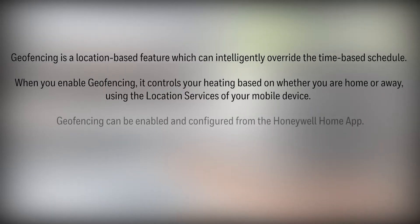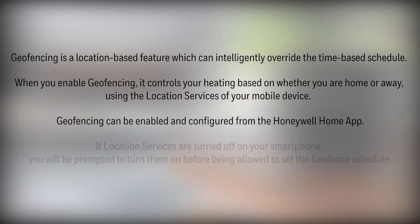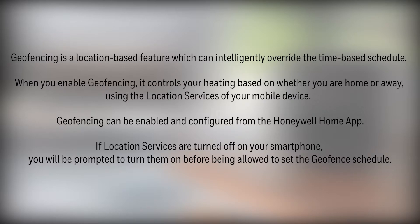Geofencing can be enabled and configured from the Honeywell Home app. If location services are turned off on your smartphone, you will be prompted to turn them on before being allowed to set the geofencing schedule.